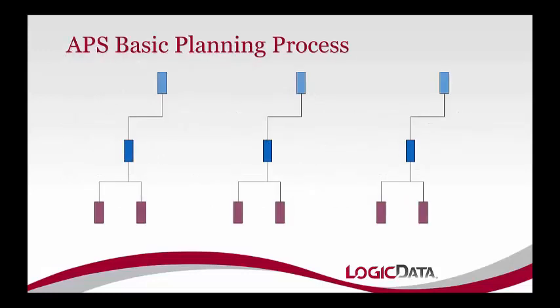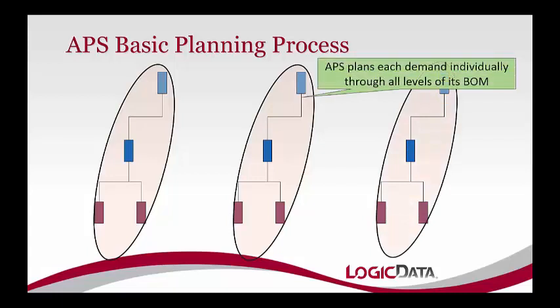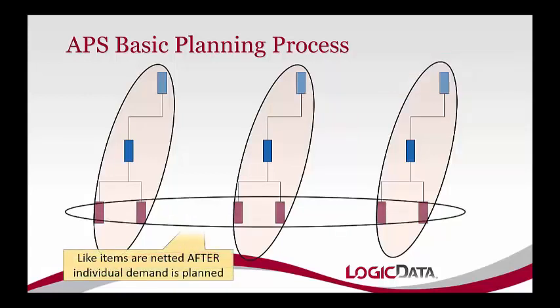Back to our simple diagram — how is APS different from MRP? MRP took the top-level requirements and planned them all together, then went down level by level. APS, on the other hand, looks at the earliest, most important requirement based on the priorities you've established, crawls down its routing and bill of material, locks in materials and resources, then moves on to the next priority demand — one by one in priority order. When it's done, it nets together similar requirements for efficiency, potentially generating one purchase order for a common component across all demands.